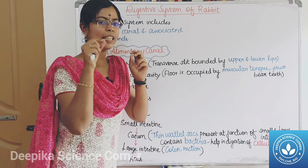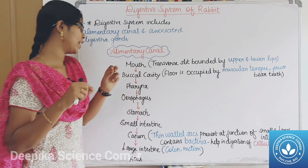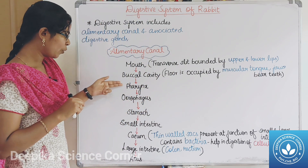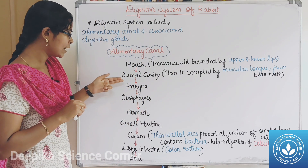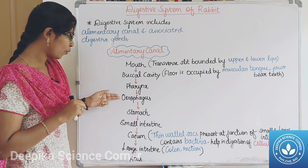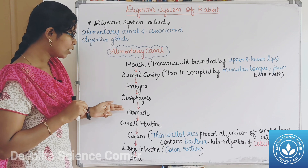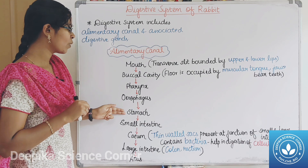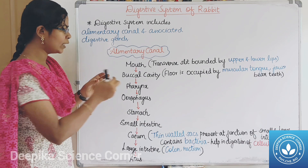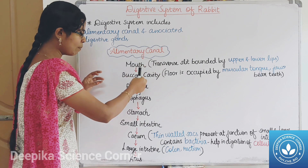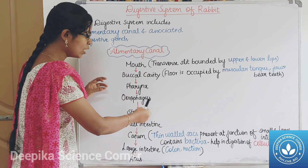The teeth are present in the buccal cavity. The buccal cavity leads to the pharynx. Next is the esophagus. Esophagus is next, then the stomach. Our food enters at the mouth and reaches the stomach.